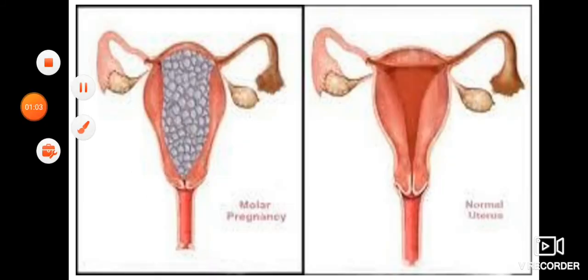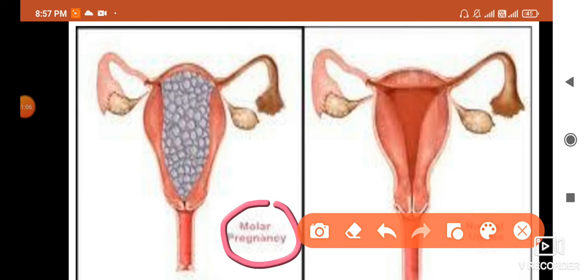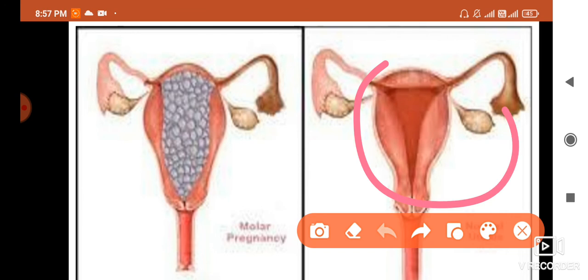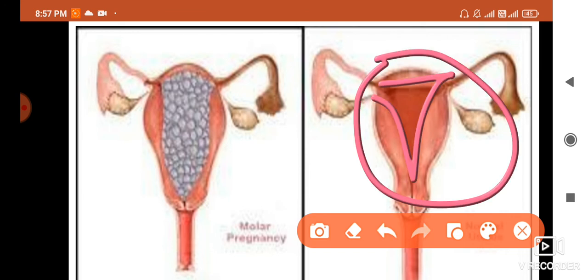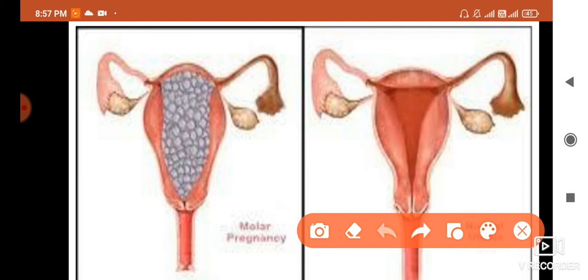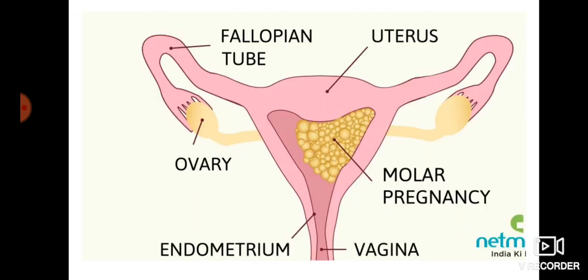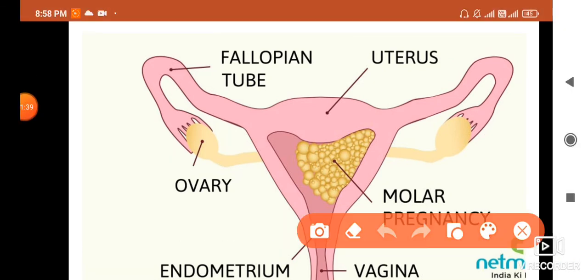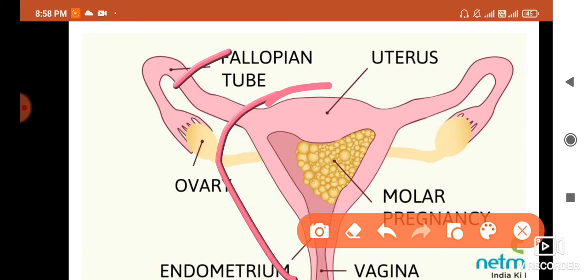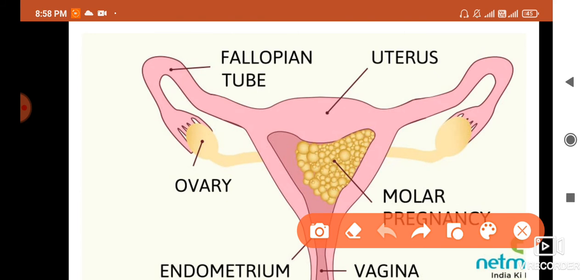इस image में आप देख सकते हैं — जो हमारी first image है वो molar pregnancy को show कर रही है, और जो second image है वो normal pregnancy को show करती है। Normal pregnancy के uterus के अंदर कोई abnormal growth दिखाई नहीं देती, लेकिन molar pregnancy में आपको abnormal growth inside the uterus देखने को मिलती है। Reproductive system की image में fallopian tube और uterus के अंदर yellow color structures दिखाई दे रहे हैं — यही abnormal growth है जिसे हम molar pregnancy या hydatidiform mole बोलते हैं।